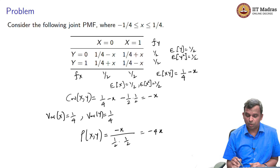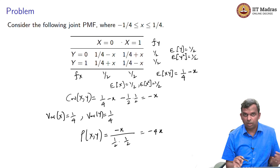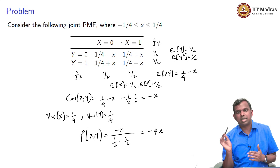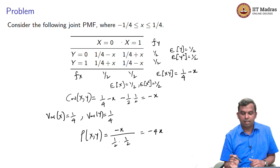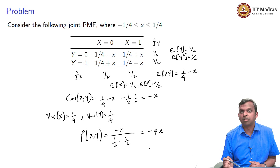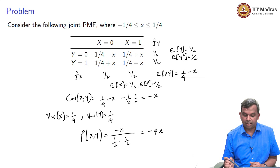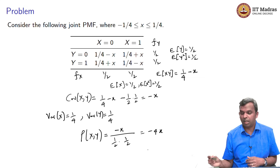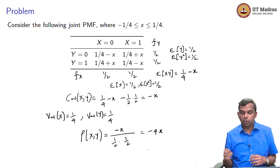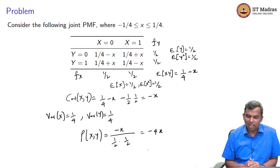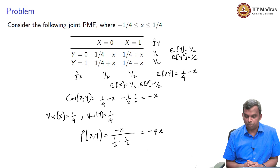You can see that if x is positive, you expect a negative correlation. If x is positive and x is 1, y is more likely to be 0. So when x is above its expectation, y is going to be below its expectation. That negative and positive comes in very clearly — that is why this covariance is negative. This gave you a quick way of seeing how rho and covariance of xy can be computed.